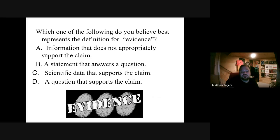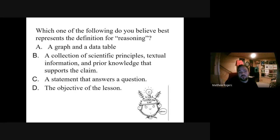Which of the following best represents the definition for evidence? A — information that does not appropriately support the claim; B — a statement that answers the question; C — scientific data that supports the claim; D — a question that supports the claim. We can throw out A. The answer is C — scientific data that supports the claim. Next, which of the following best represents the definition for reasoning? The answer should be B — the collection of scientific principles, textual information, and prior knowledge that supports the claim, especially connecting it with the evidence.